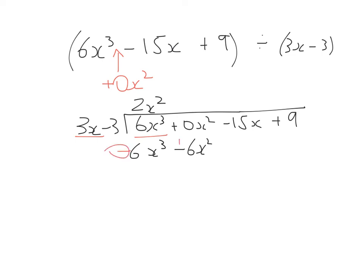We multiply that by both our terms on the outside. That gives me 6x³ - 6x². Change both their signs. And as you can see, I've got an x² adding with another x². That's what I needed to happen there. That's going to give me 6x². Bring down my next term.